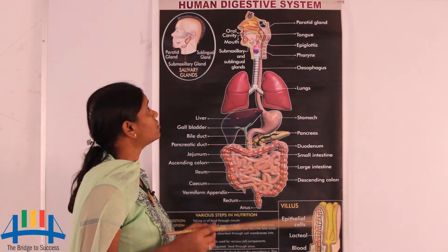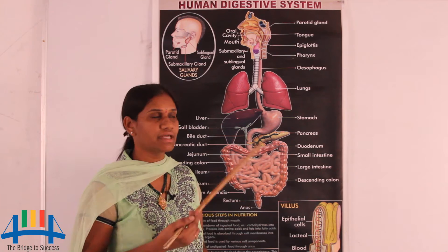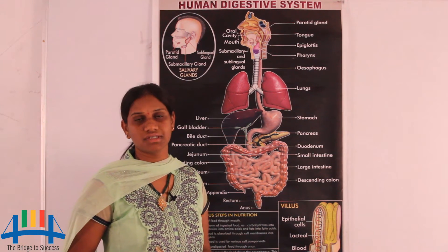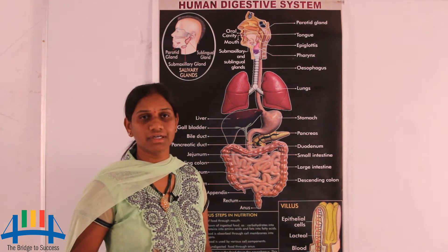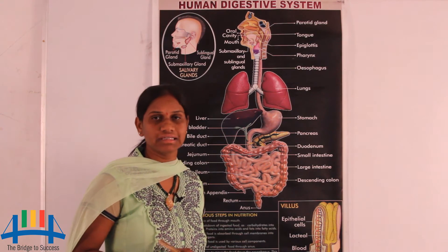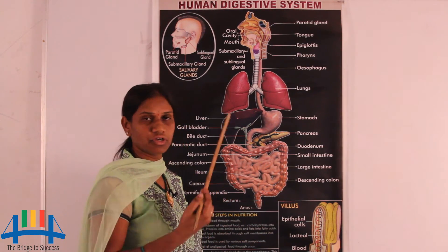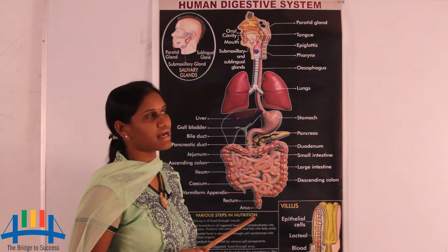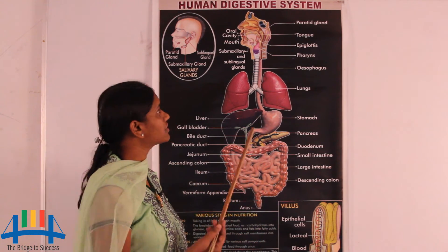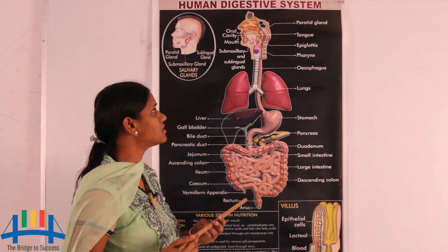Friends, now we are going to look at the human digestive system with the help of a chart. What is the meaning of digestive system? How it will help us, what is going on in it, and what internal parts are there — we are going to look at all of that with the chart. First, the human digestive system is also known as the alimentary canal.